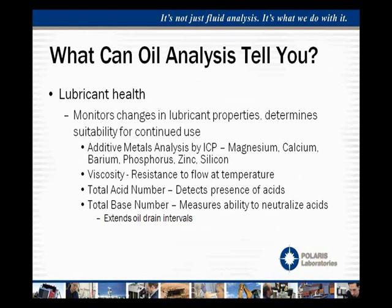We also look at additive metals — the elements within a lubricant that give it additional lubricating properties. We look at elements such as magnesium, calcium, barium, phosphorus, zinc, and even silicon. We monitor these to ensure those elements are where they should be from a specification standpoint, and also to ensure we're not doing any type of lube mixing. Some additives — for example, a hydraulic oil with anti-wear properties mixed with a turbine oil with rust-oxidation inhibiting properties — can interact and actually cause damage to the component because of how they're formulated.